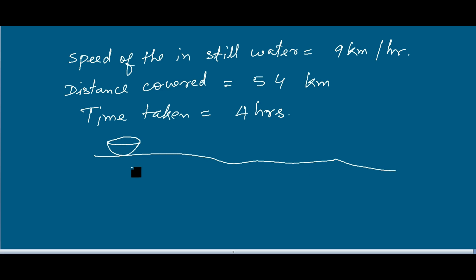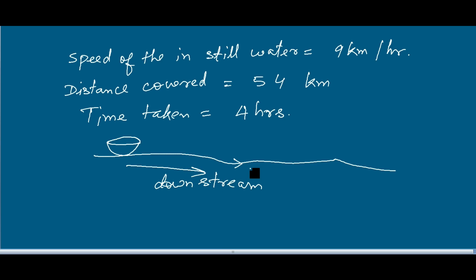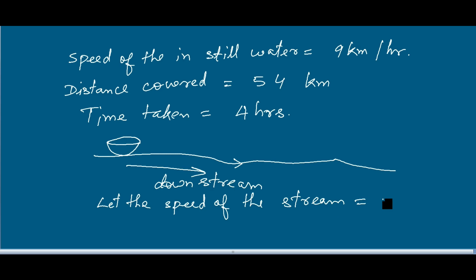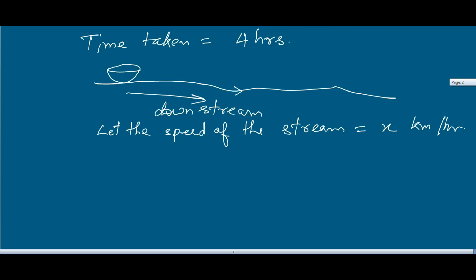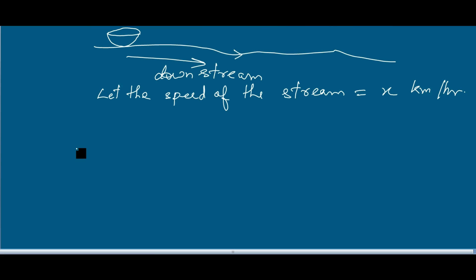The boat is traveling downstream. Downstream means the speed of the water is also in the same direction. Let the speed of the stream be x, so the total speed will be 9 plus x kilometers per hour. The relative speed here will be 9 plus x kilometers per hour.